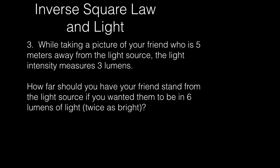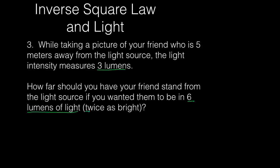Now let's look at how light is affected by the inverse square law. We can calculate the intensity of light based on the inverse square law. The example says: while taking a picture of your friend who is 5 meters away from the light source, the light intensity measures 3 lumens — lumens is a unit for measuring light intensity. The question asks how far your friend should stand from the light source if you wanted them to be in 6 lumens of light, which is twice as bright.